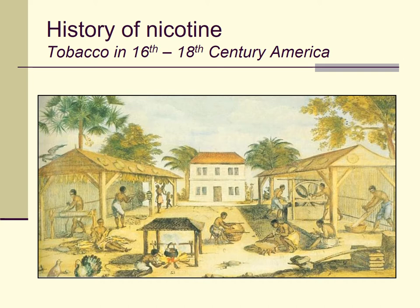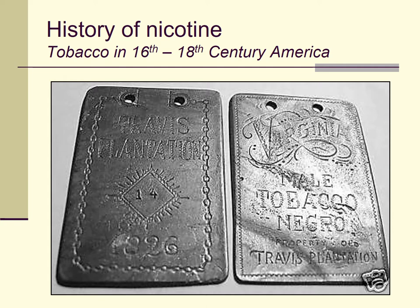Here is an artist's pencil and color sketch of a tobacco plantation during that time period. You can see slaves here processing the tobacco so that it can be shipped. And here are some tags that a slave would wear to identify who owned him — pressed into the metal is the name of the Travis plantation, Virginia, dated around 1826. You can see this is a tag that would be applied to the collar of a male tobacco worker, property of the Travis plantation. One of America's really dark legacies was a legacy tied up in the production of a drug.